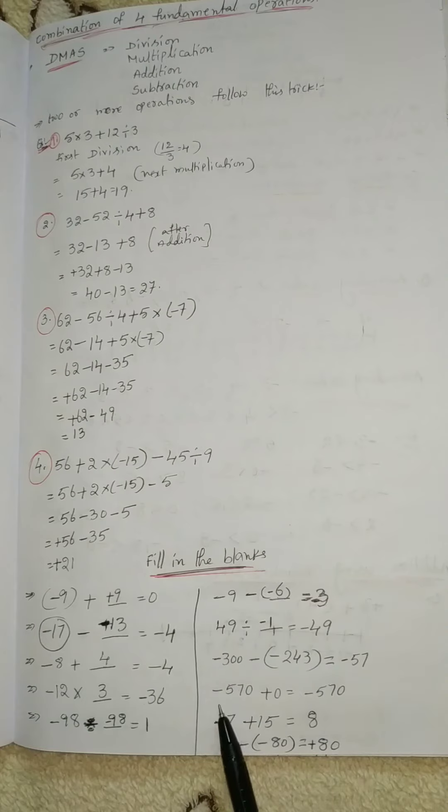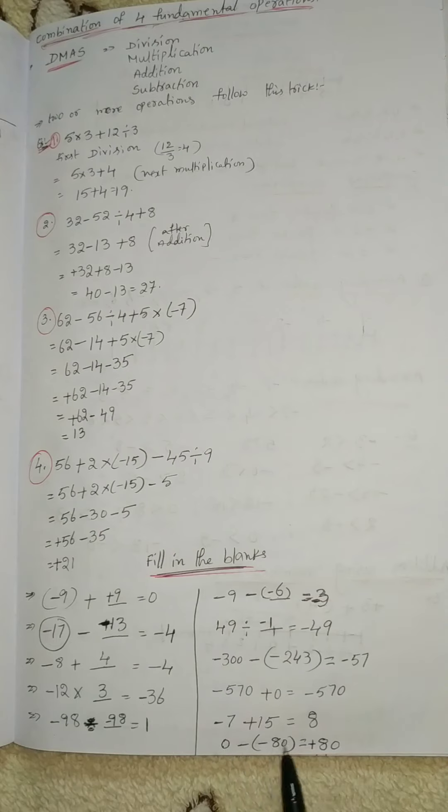-570 plus 0 equals -570. -7 plus 15 equals 8, subtract this number and put the positive sign. 0 minus -80: minus times minus equals plus, so plus 80. Thank you everyone, please subscribe to my channel.